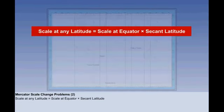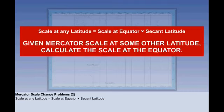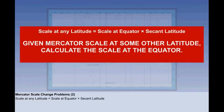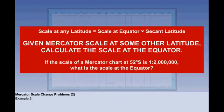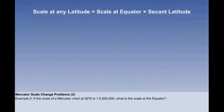Using the standard Mercator scale change equation, let's now deal with the second type: given Mercator scale at some other latitude, calculate the scale at the equator. Example 2: if the scale of a Mercator chart at 52 degrees south is 1 to 2 million, what is the scale at the equator? Again, start with the basic equation. We know the scale at 52 degrees south — it's given in the question: 1 to 2 million.